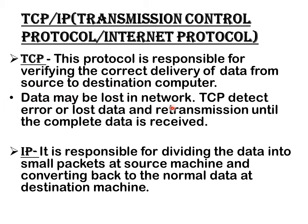Data may be lost in the network; TCP detects errors or lost data and retransmits until the complete data is received. IP, on the other hand, is responsible for dividing the data into small packets at the source machine and converting them back to normal data at the destination. So IP divides the data into packets, and TCP controls delivery to ensure everything is received correctly.